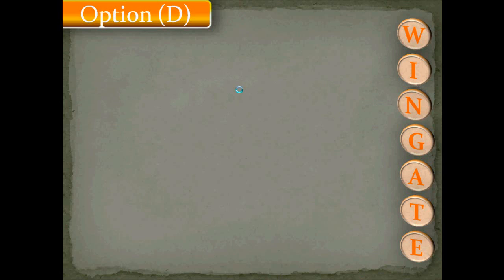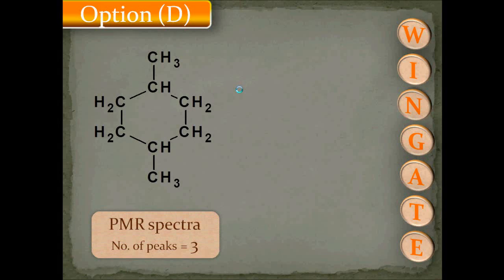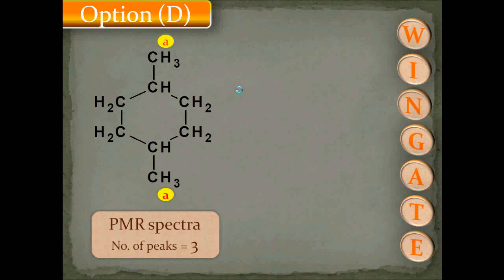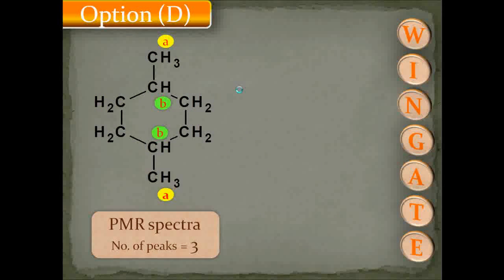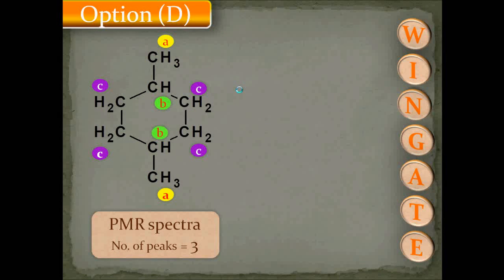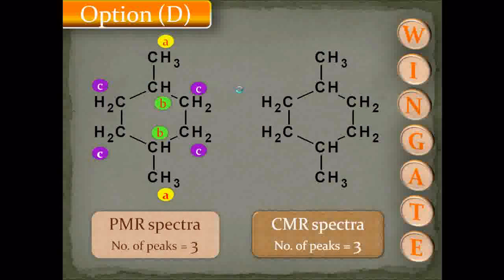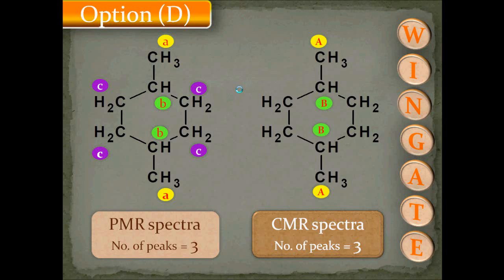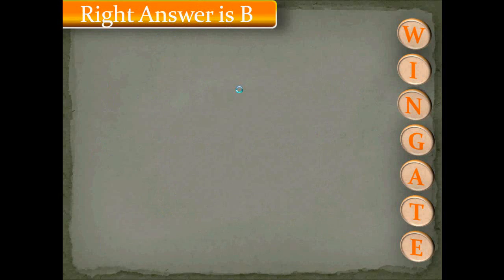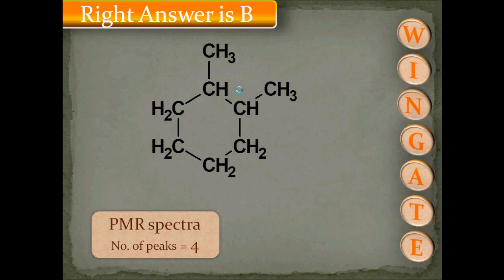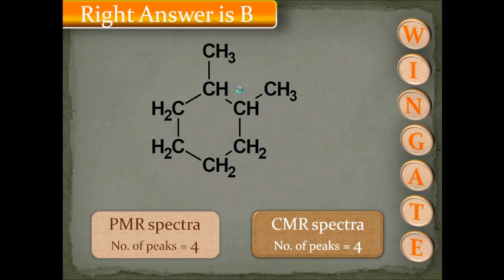For option D, 1,4-dimethylcyclohexane, the PMR spectra shows only 3 peaks: protons A are on the side chain, protons B are attached to the side chain, and all protons C are ortho and equivalent to the other side chain — total 3 PMR signals. Similarly, the CMR spectra also shows 3 signals. So option D is false. The correct answer is 1,2-dimethylcyclohexane, which gives 4 peaks in both PMR and CMR spectra.